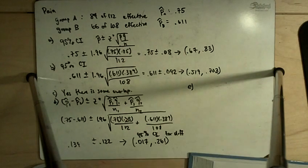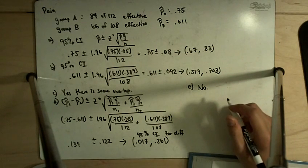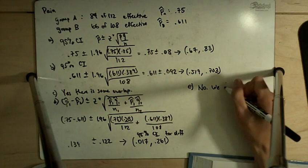Part E asks, does the interval contain 0? No. 0 is not in the interval, which means we have evidence that there is a difference.